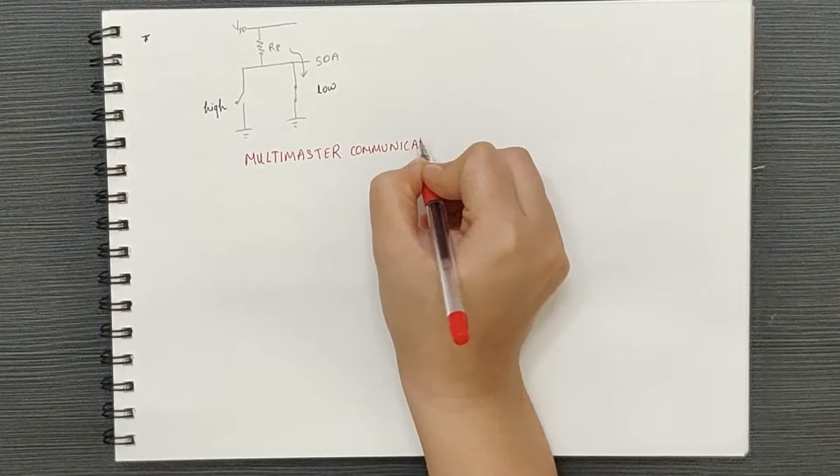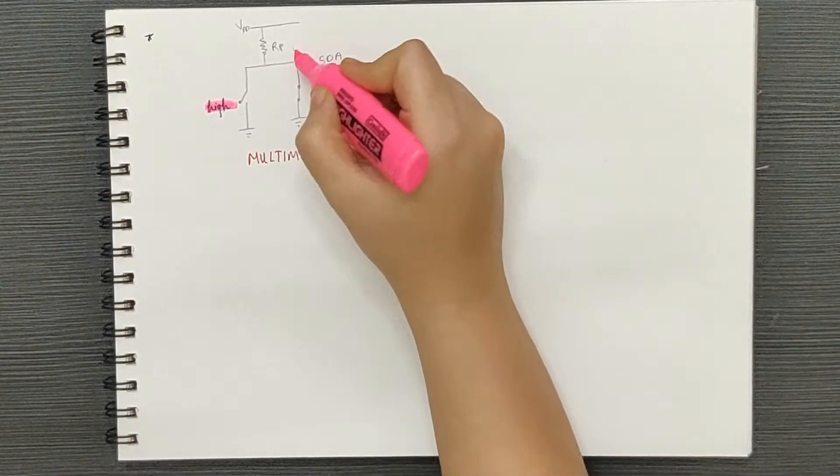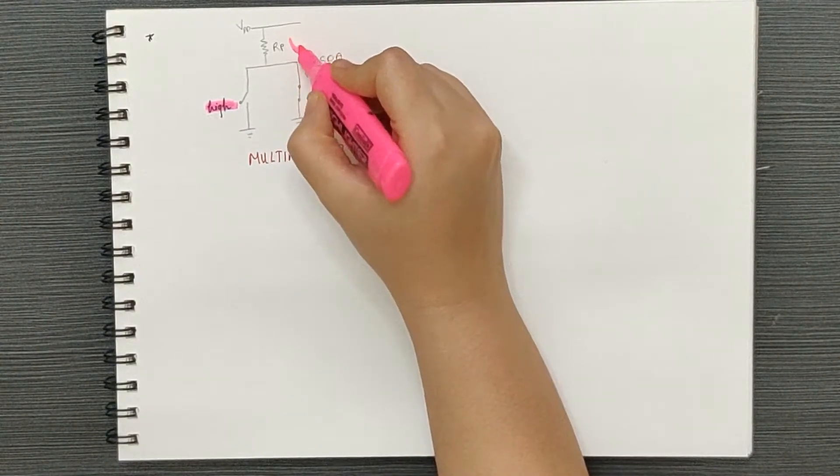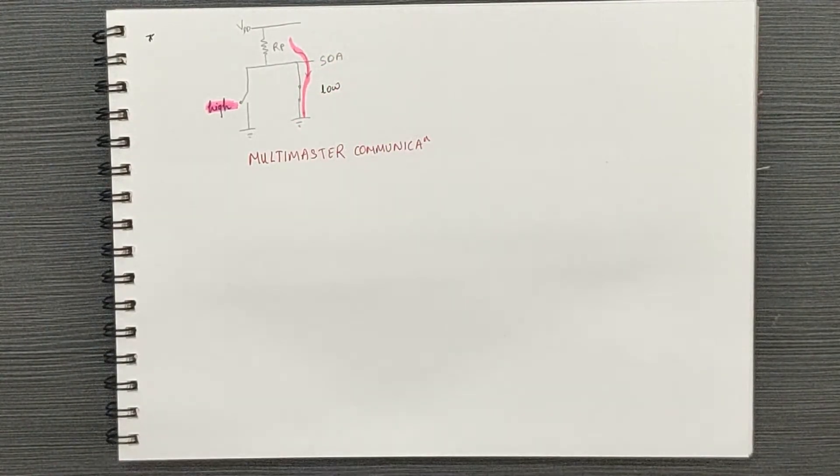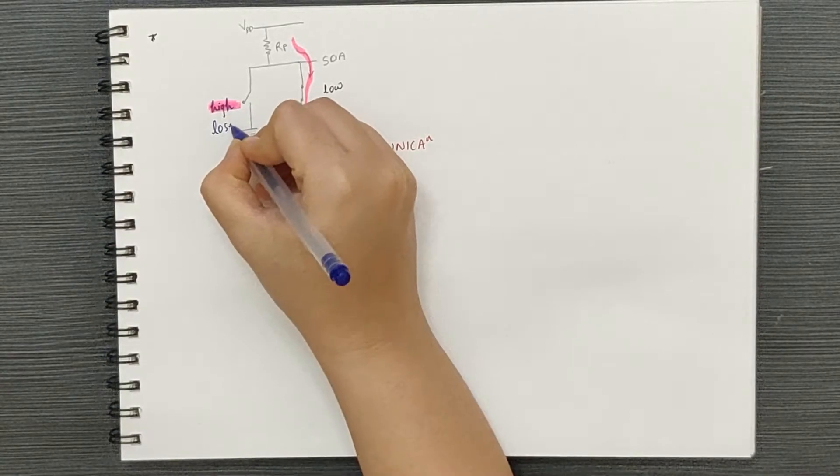As we had seen in part 2 or in the previous video, a master that transmits a high but sees the line low as another one is trying to pull it low loses the arbitration and goes back to slave mode.